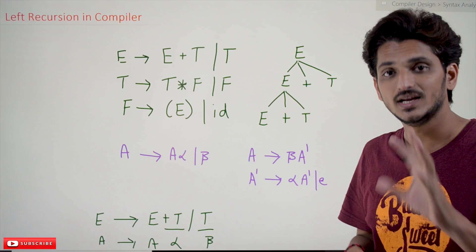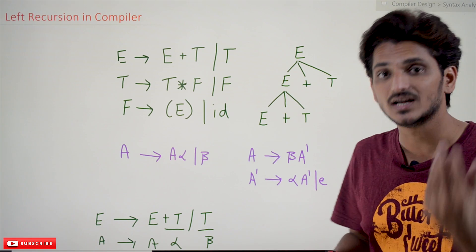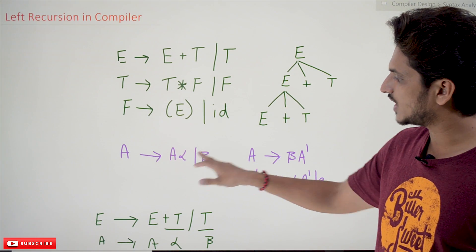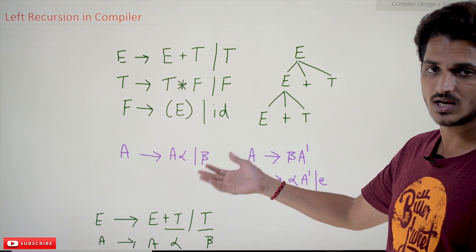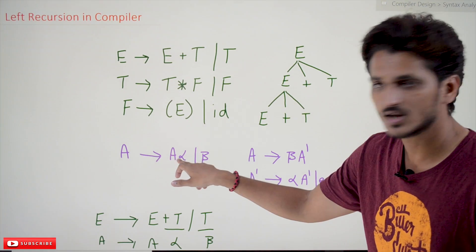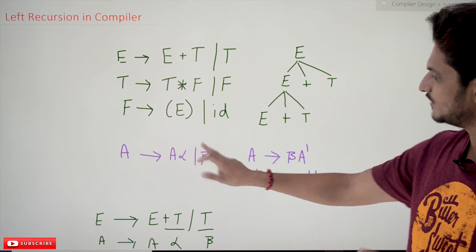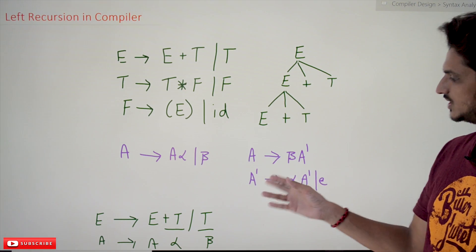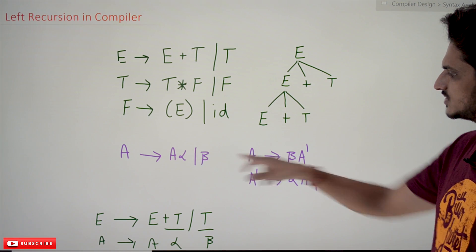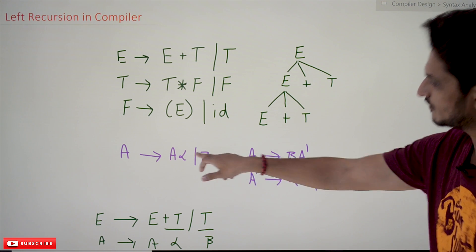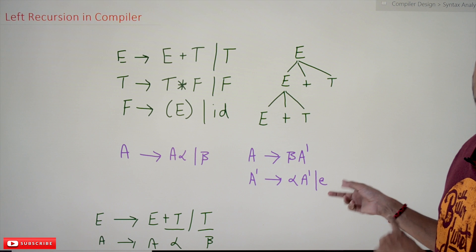If our production is of this form: A tends to A alpha or beta, then we can eliminate this. Here A calling A again, so left recursive. If it is of this form, we can eliminate this left recursion using this equation: A tends to beta A dash. One more production is taking A dash. A dash tends to alpha A dash or epsilon. This is how we are eliminating the left recursive grammar.